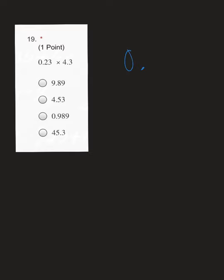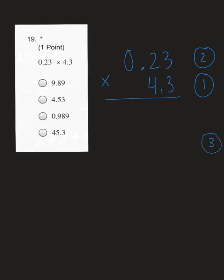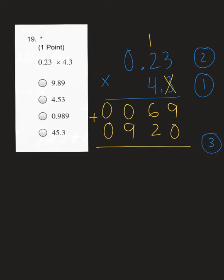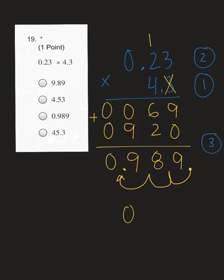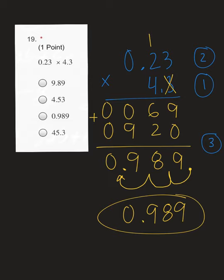The final multiplication problem is 0.23 times 4.3. In your first number, you have two numbers after your decimal; in your second number, you have one — so 2 plus 1, you've got to move our decimal three places in the final answer. 3 times 3 is 9. 3 times 2 is 6. 3 times 0 is 0. Tack our 3, toe our 0. 4 times 3 is 12 — put a 2, carry a 1. 4 times 2 is 8, plus 1 is 9. 4 times 0 is 0. Add our products with a placeholder: 9 plus 0 is 9, 6 plus 2 is 8, 0 plus 9 is 9, 0 plus 0 is 0. Move our decimal three places to get a final answer of 0.989, which was C on your form.